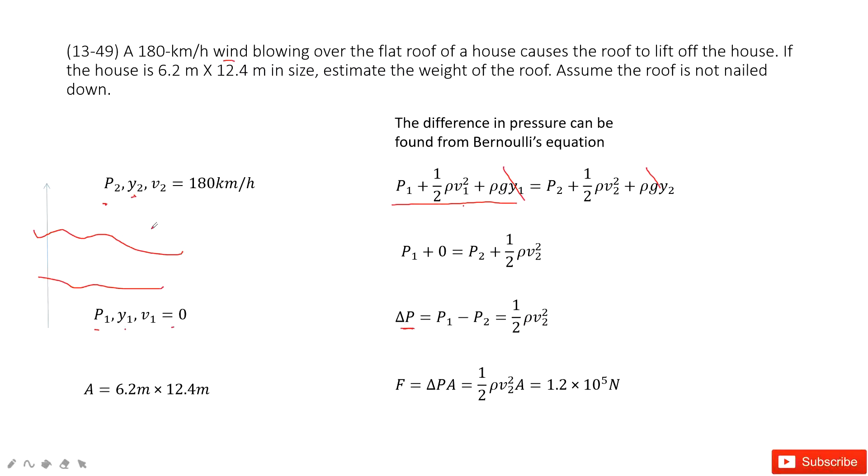Now, next step, how can you find the force, the weight? This force just equals the weight. This force is the pressure times the cross-sectional area A. A is given 6.2 meter times 12.4 meter in size. So now we can find this force equals the difference pressure times A and input the known quantities. We get the final answer.